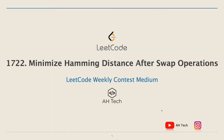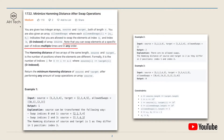Hi everyone, it's Albert. Today let's solve the contest median question: Minimize Hamming Distance After Swap Operations. We are given two integer arrays, source and target, both of size n, and another array called allowSwaps where each item is an array of size two — ai and bi — indicating we are allowed to swap the elements at index ai and index bi of the source array. Importantly, we can swap elements at a specific pair of indices any number of times and in any order.